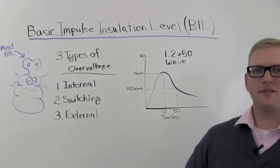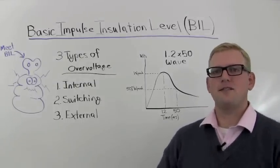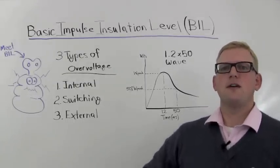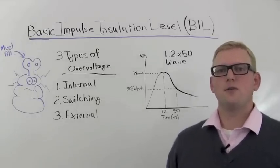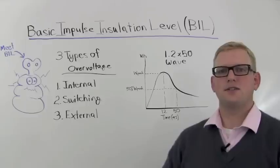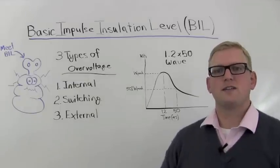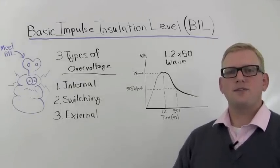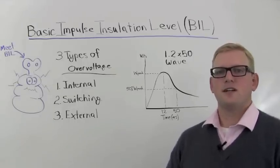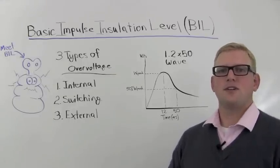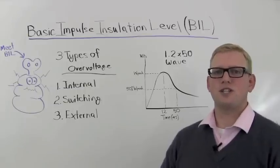BIL is looking out for internal surges. Electrical systems have natural internal variations in voltage levels just due to normal operating conditions. Number two: switching. If an operator switches on or off a piece of equipment, this will cause a surge — a spike in voltage. BIL is looking out for surges due to switching.